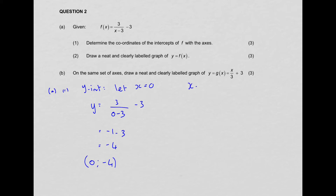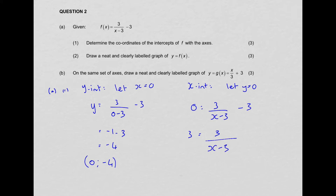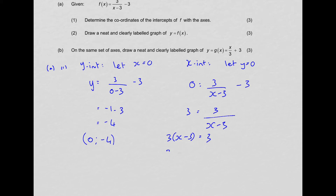So the Y-intercept is (0, negative 4). For the X-intercept, let Y equal 0. So 0 equals 3 over (x minus 3) minus 3. Take over the negative 3: 3 equals 3 over (x minus 3). Multiply both sides by (x minus 3), distribute the 3: 3X minus 9 equals 3. Take over the 9: 3X equals 12, therefore X equals 4. So our X-intercept coordinate is (4, 0).